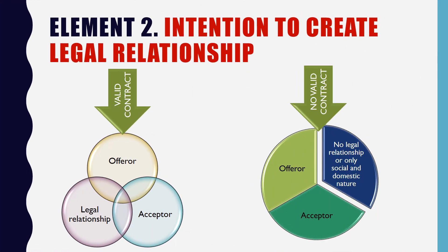Element 2: Intention to Create Legal Relationship. A valid contract can be created when there is a legal relationship between the offerer and the acceptor. If the offerer and acceptor have no legal relationship, then no valid contract will be created. If there is a social and domestic nature of relationship between them, it is not termed as a legal relationship. For example, a father and son do not have a legal relationship — they only have a social and domestic relationship. So if a father pays Rs. 50 every day as pocket money to his son, and one day he fails to pay, you cannot sue the father because they have only a domestic relationship.